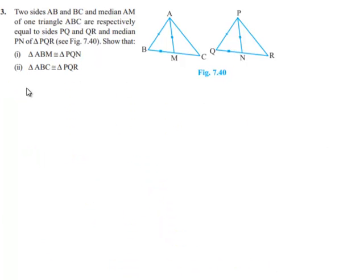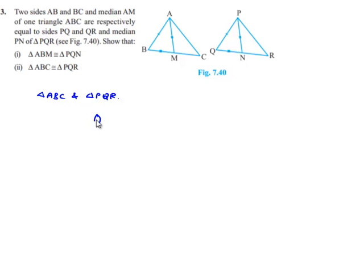Now, in order to prove the congruency of triangle ABC and triangle PQR, let us consider them. In triangle ABC and triangle PQR, AB is equal to PQ, which is given.